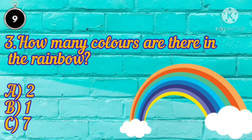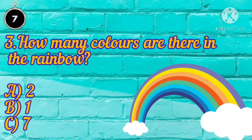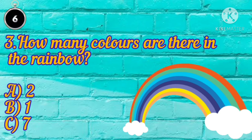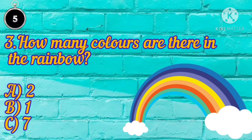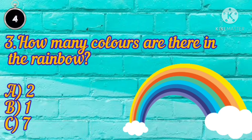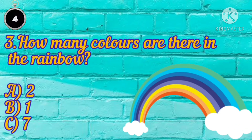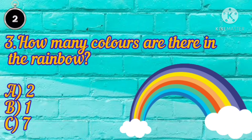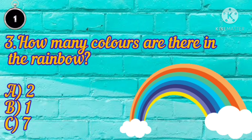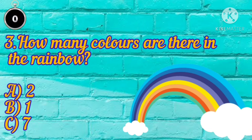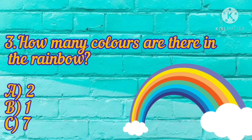How many colors are there in the rainbow? A. 2. B. 1. C. 7.